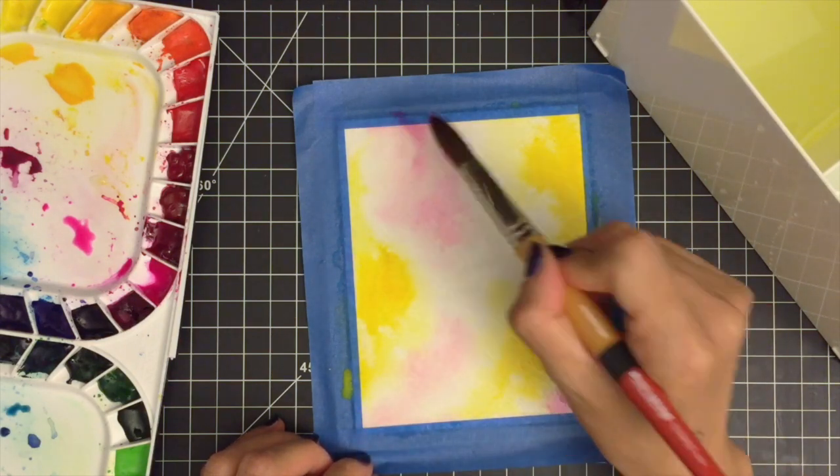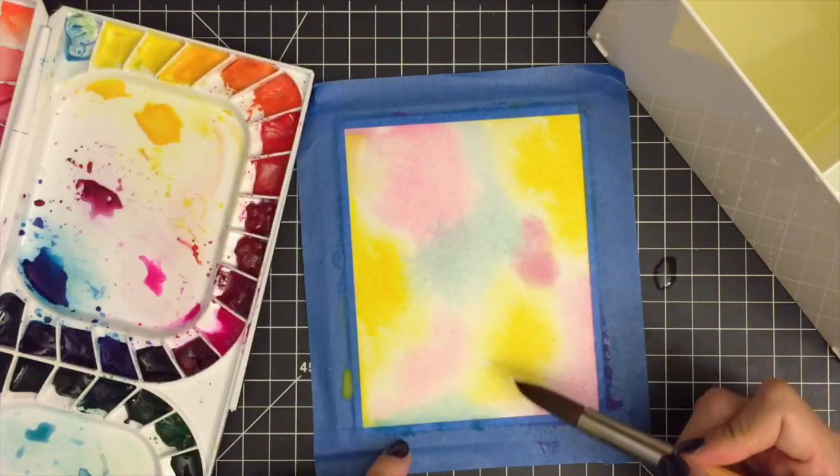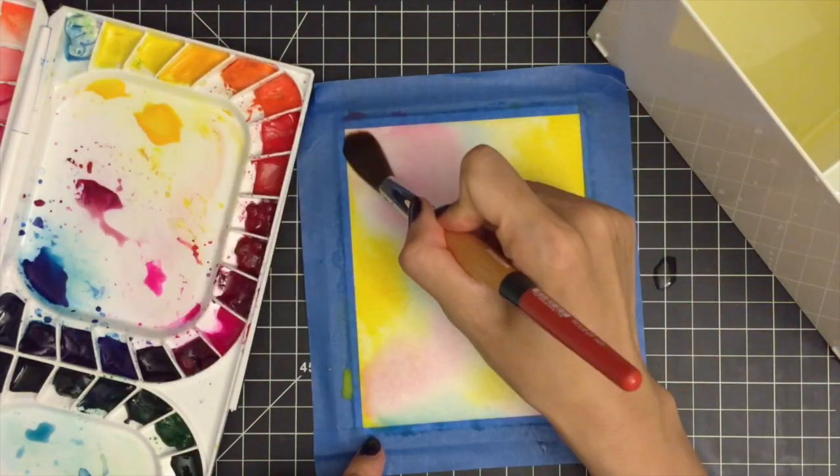I'm simply wetting my paintbrush with water and paint and moving the paintbrush across the paper. This is best done with a large paintbrush, and here I am using a round paintbrush size 20.